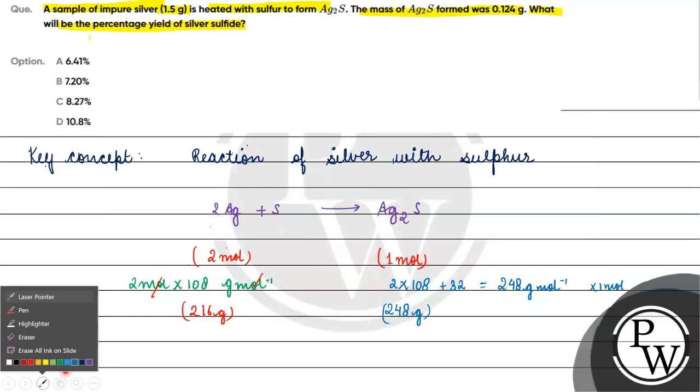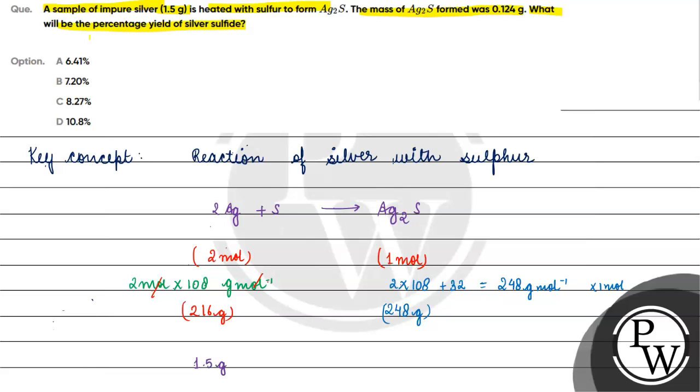If we have 1.5 grams of silver, then how much silver sulfide will form? We have 248 by 216 into 1.5. This will come to 1.722 grams. Now let's calculate percentage yield.